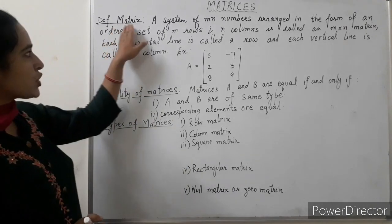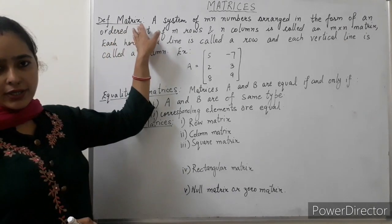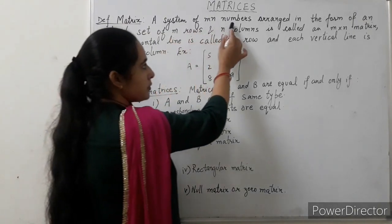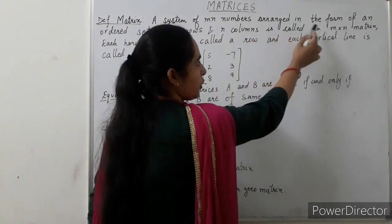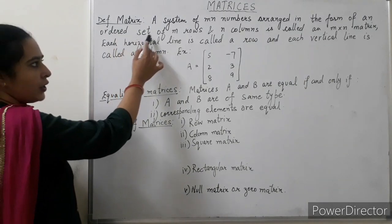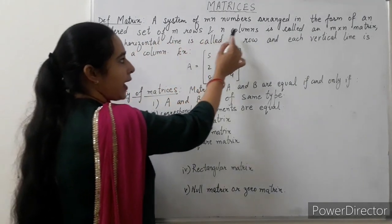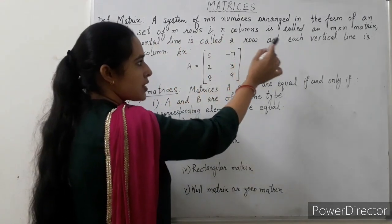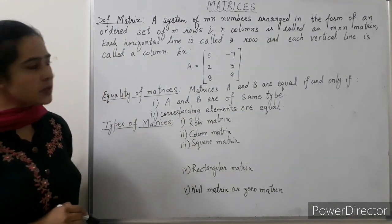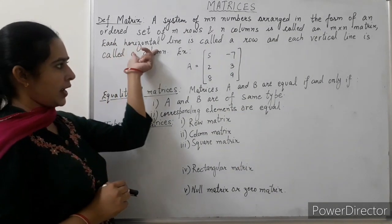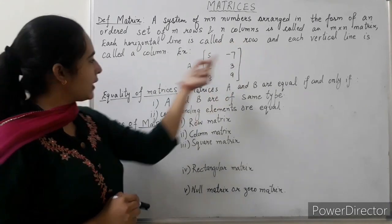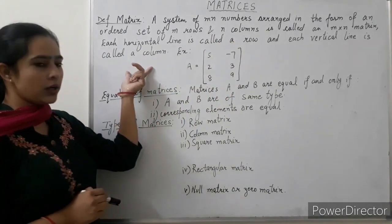First is the definition of matrix. A system of MN numbers arranged in the form of an ordered set of M rows and N columns is called an M by N matrix, where each horizontal line is called a row and each vertical line is called a column.